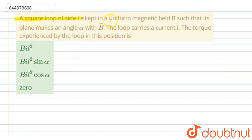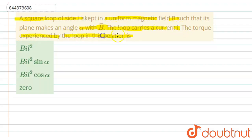A square loop of side l is kept in a uniform magnetic field B such that its plane makes an angle of alpha with the magnetic field vector B. The loop carries a current of I. The torque experienced by the loop in this position is — let's look at the solution.